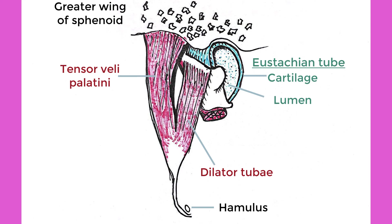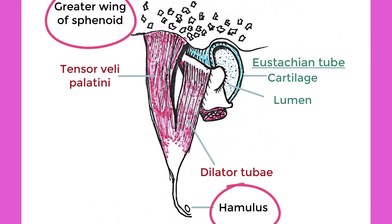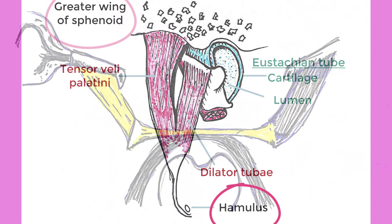Any disruption to the structure of the tensor velli palatini muscle, either at its origin at the sphenoid or at its insertion at the palatine aponeurosis, will inevitably affect its ability to open the eustachian tube.